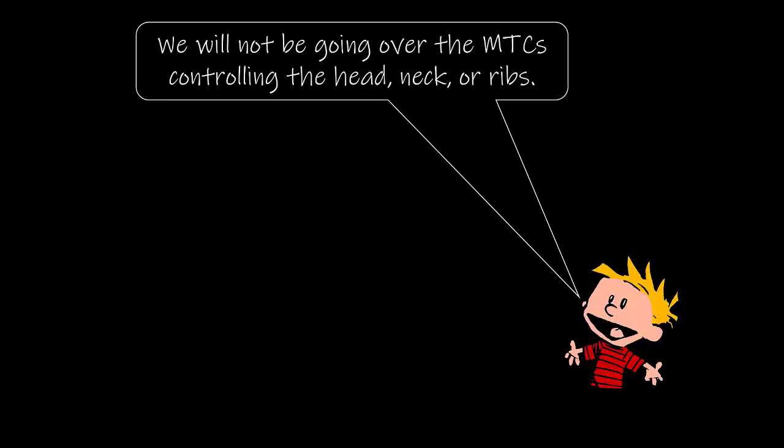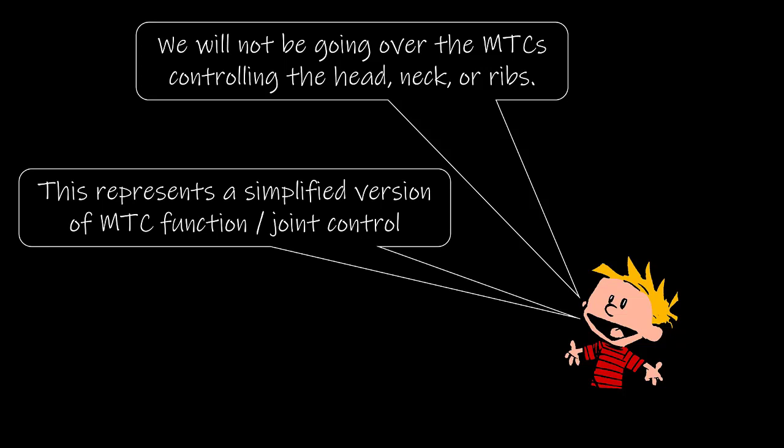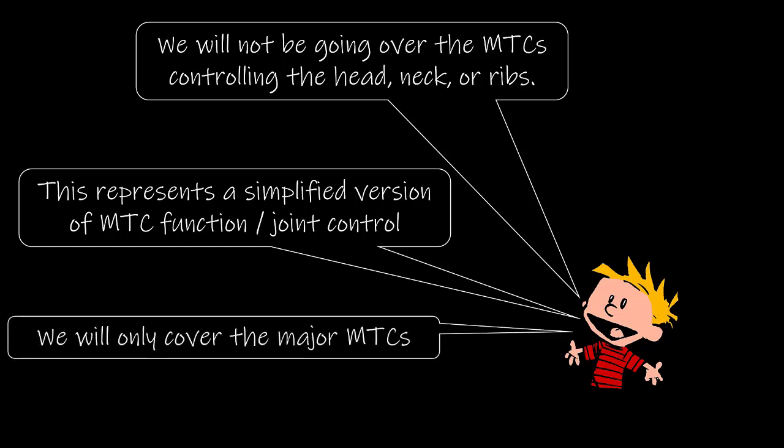A couple of words of caution before we begin. First, for this module, we will not be examining the MTCs that control the head, the neck, or the ribs. Second, it is important to understand that this model represents a simplified version of MTC function in joint control. We are going under the assumption that each joint would be moving in isolation. Multi-joint movement is a lot more complex than this, but we've got to start somewhere. Third, we will not necessarily examine every MTC that creates torque about a joint — we will only be examining the major ones in this module.